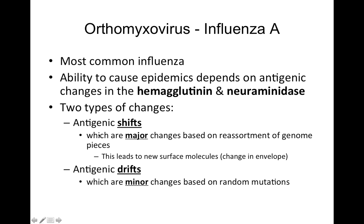Antigenic shift is a major change based on reassortment of genome pieces, leading to new surface molecules such as a change in the envelope. Antigenic drift is a minor change based on random mutation. If you think about the word drift, it seems slow and minor. Think of drift as a slow, minor thing, whereas a shift — like an earthquake — is a major change.